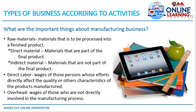Whether directly or indirectly involved in creating the final product, all play an important role. Examples of manufacturing businesses include Rubina Corporation, Procter and Gamble, and Samsung, which creates Samsung gadgets. That is all for this week. Thank you to all who listened to this video, and hope to see you for our next lesson. Goodbye and thank you, everyone.